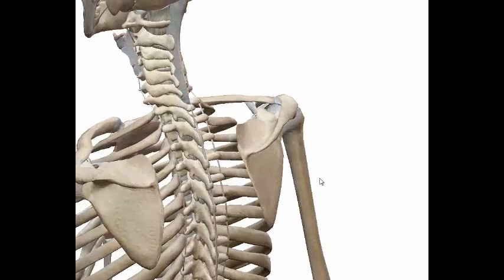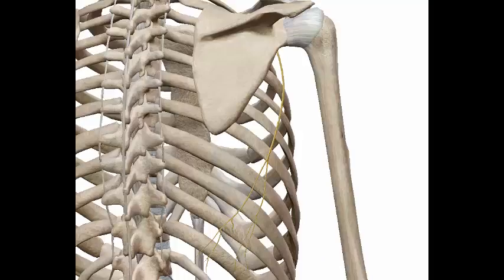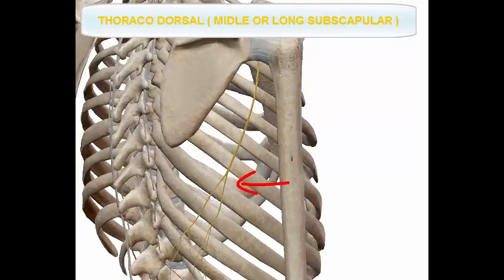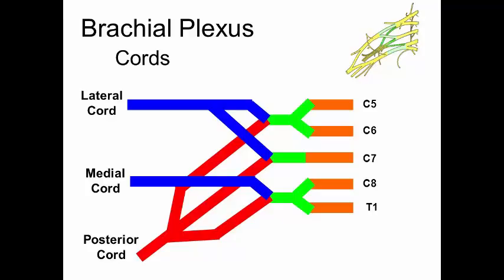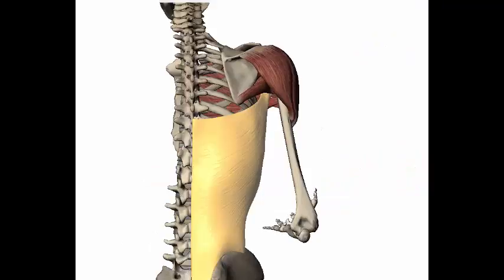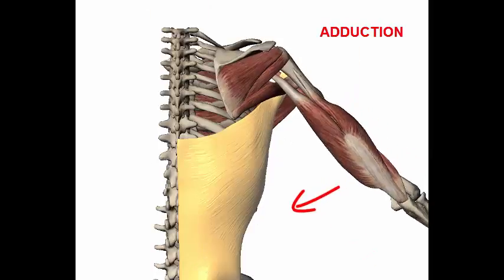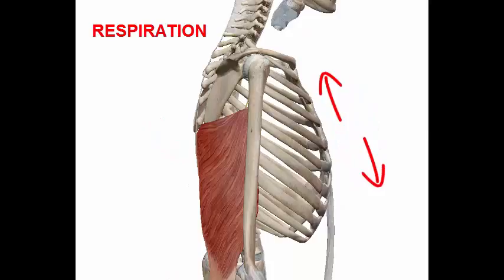The latissimus dorsi inserts into the intertubercular groove of the humerus. The nerve innervation is the thoracodorsal nerve, also known as the long subscapular nerve, a branch of the posterior cord C6 to C8. The actions of the latissimus dorsi include medial rotation, adduction, extension, and respiration.